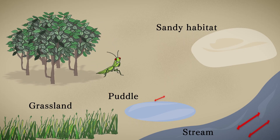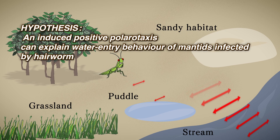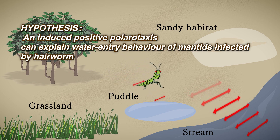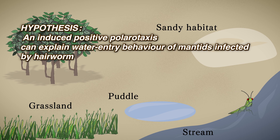Thus, we hypothesize that an induced positive polarotaxis can explain the water entry behavior of a terrestrial insect host infected by a hairworm.